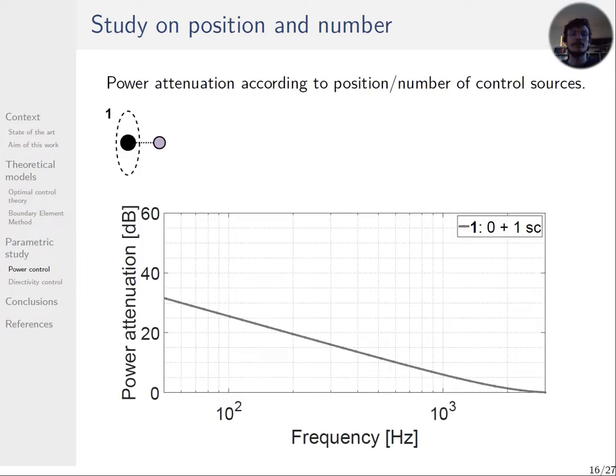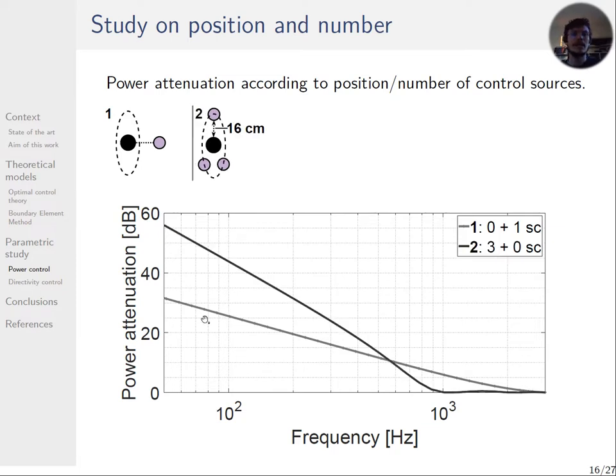Here is shown the corresponding power attenuations for all the cases, beginning by case 1 with only one control source. Its resulting power attenuation is a straight line until 2 kHz. Adding case 2, with three sources placed further, we can see that the power attenuation for the first case is better in high frequency because the control source is placed closer to the primary one. However, the power attenuation is better in low frequency for case 2 due to the higher number of sources.